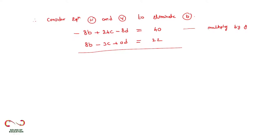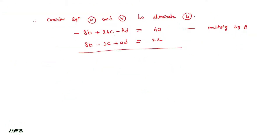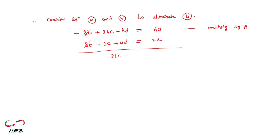Equation number three was: minus B plus 3C minus D equals 5. Multiply this by 8 to get: minus 8B plus 24C minus 8D equals 40. Equation five is: 8B minus 3C plus 0D equals 22. Adding both, 8B and minus 8B cancel, giving new equation six: 21C minus 8D equals 62.